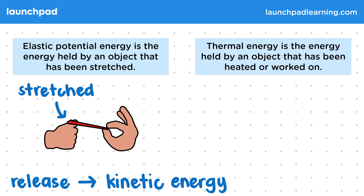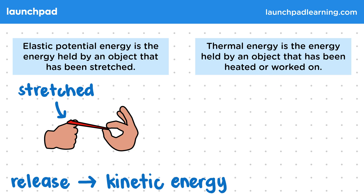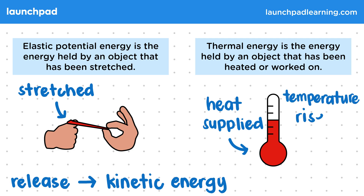Another type of energy store is thermal energy. This is the energy held by an object that has been heated or worked on, and it's a type of energy we associate with temperature. When heat is supplied to an object, which is a special way of transferring energy, then the object's temperature rises.